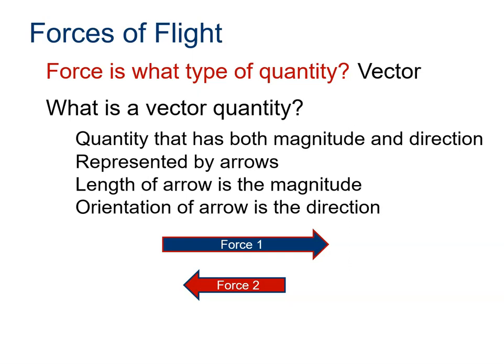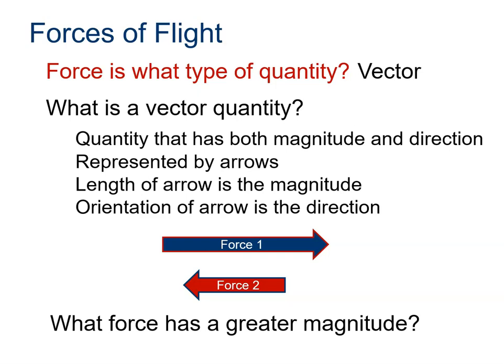We can write '35 miles per hour north,' or we can represent vectors graphically with arrows. When drawing vectors, the length of the arrow represents the magnitude — the longer the arrow, the greater the magnitude — and the arrow also indicates direction. Here we have force going to the right and force going to the left. Which one has the greater magnitude? The longer one — Force 1, of course.